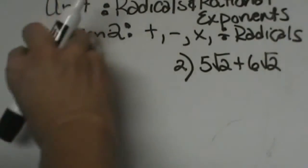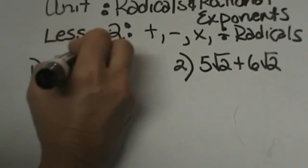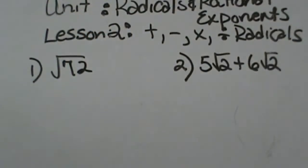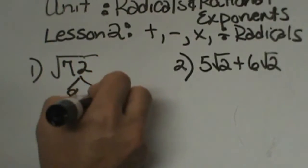Let's try another one of those just to give it another go. Let's say you're taking the square root of 72. You could factor this a couple different ways. I'm going to do 8 times 9.